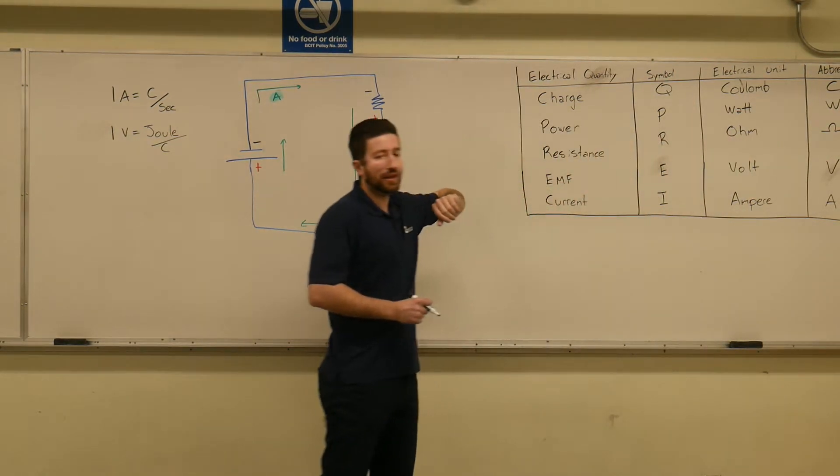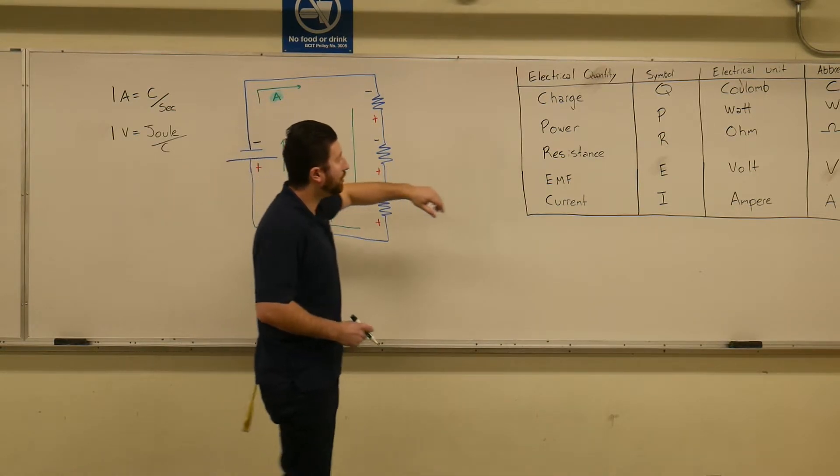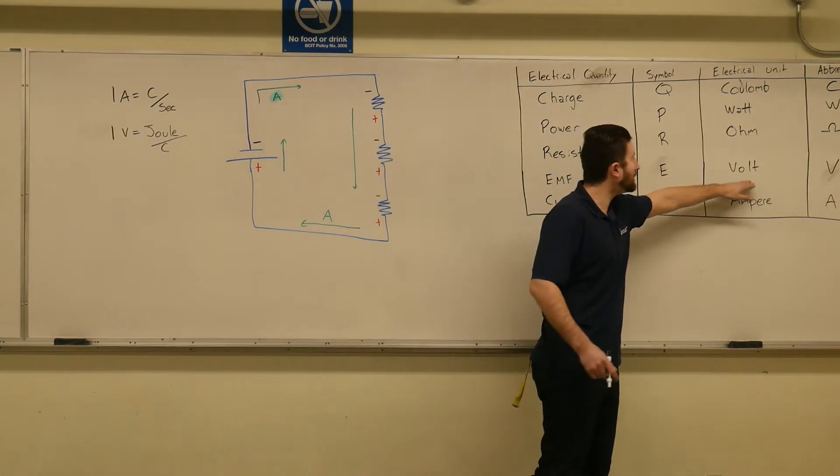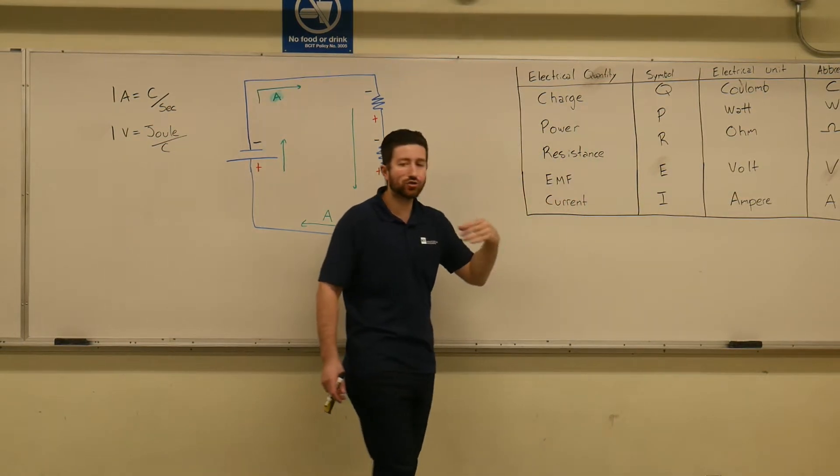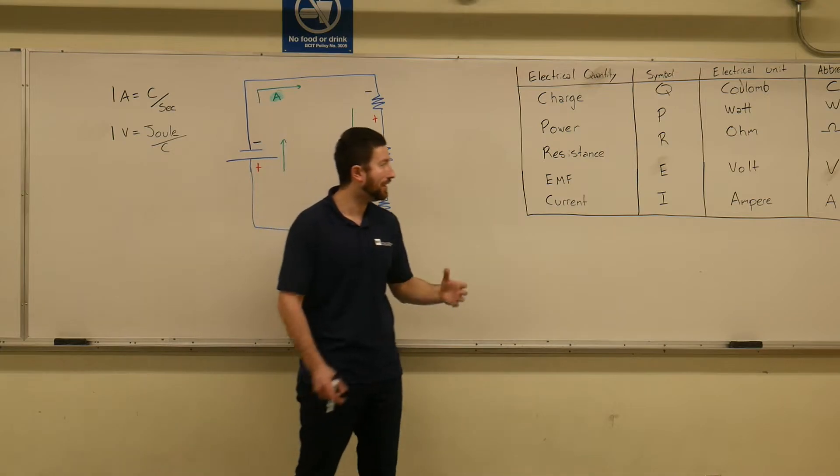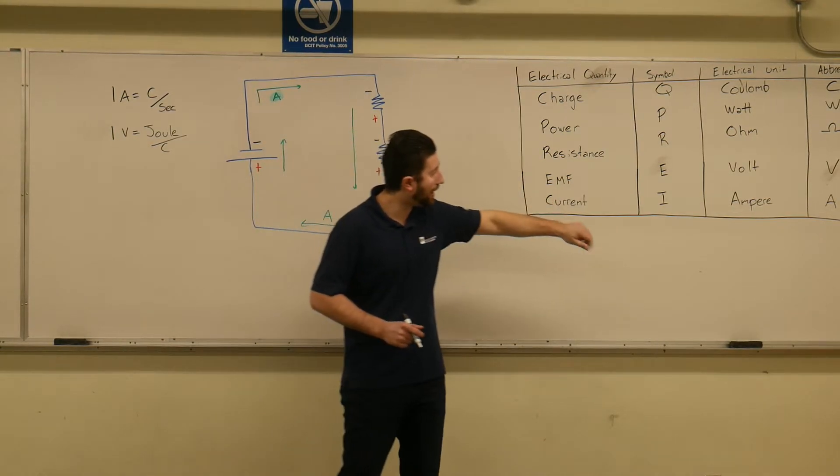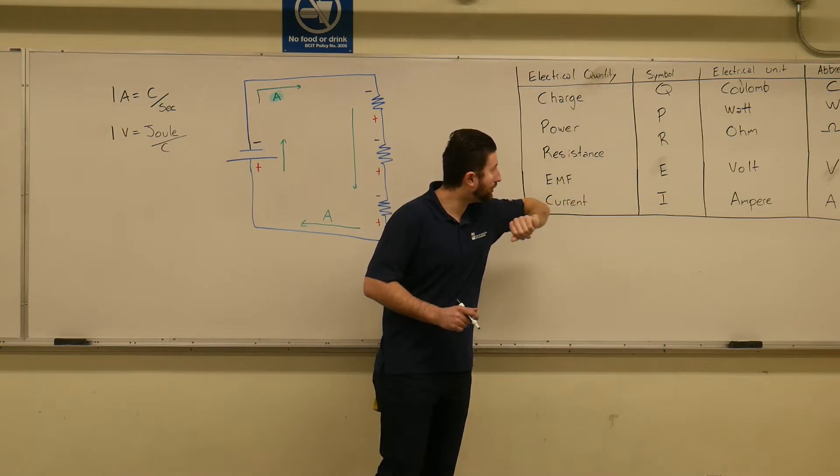Now, we also have our voltage here, which I put the V for volts. EMF. EMF is another way of saying a source. Electromotive force. EMF is a voltage as well. And you got our current I amperes for your A.